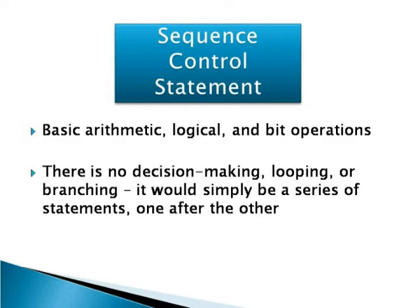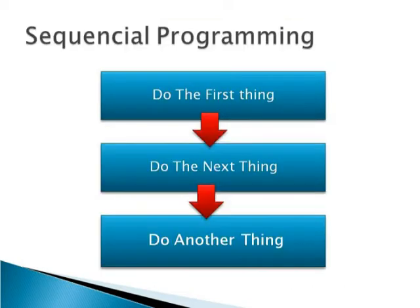Sequence is the simplest control structure. Basic arithmetic, logical and bit operations are sequences. Data moves and copies are also sequences. Most register and process control activities are sequences. Sequential structures are done sequentially. It is a program segment where programs are executed one after the other.